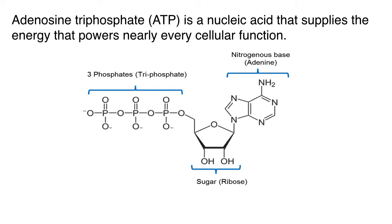ATP supplies the energy for cellular functions. When the cell needs energy for anything — active transport, moving a muscle, a chemical reaction — it can only get that energy from molecules of ATP. Well, mostly. There are exceptions, some of which we will learn about later in this course, where a slightly different molecule other than ATP is used.